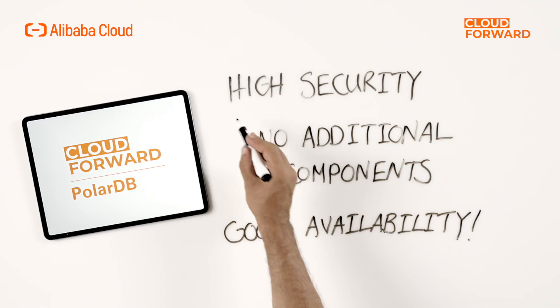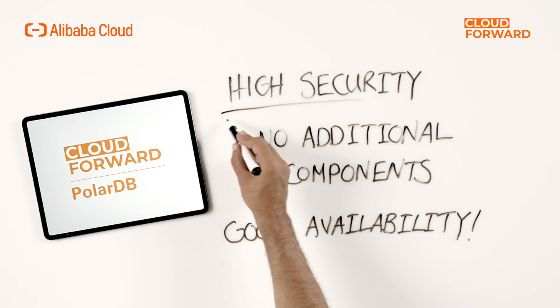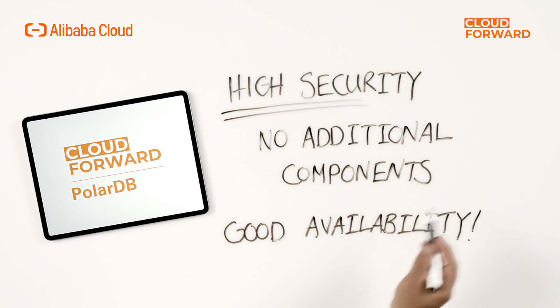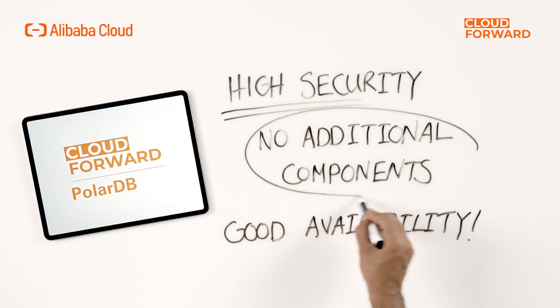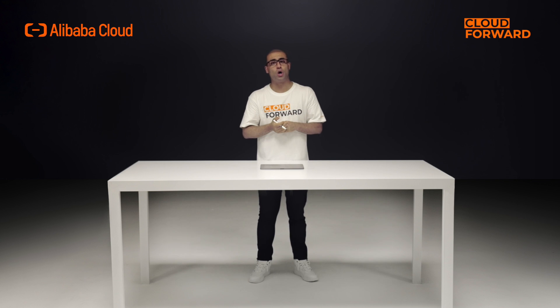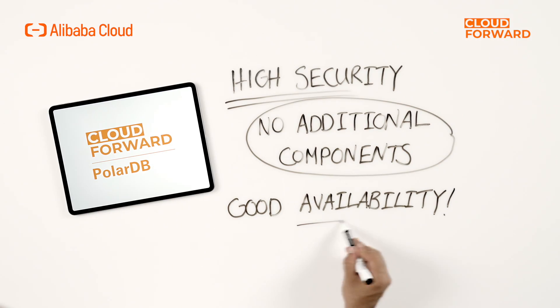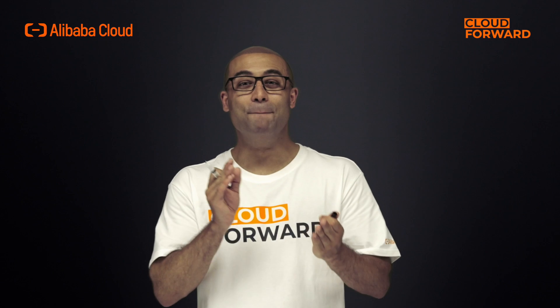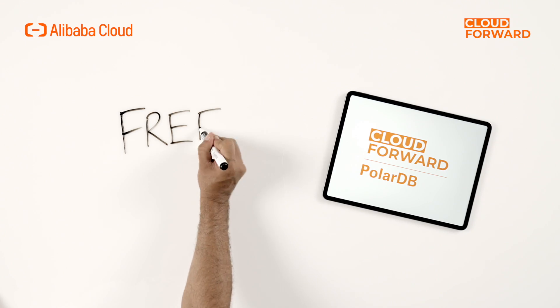Furthermore, the read and write splitting feature of PolarDB is built on top of existing secure links, with no additional components to consume, effectively reducing latency and increasing processing speed. The module will also perform health checks on all nodes in the cluster automatically, to improve database system availability. Most importantly, the entire function is totally free of charge.